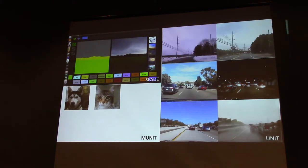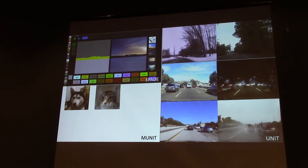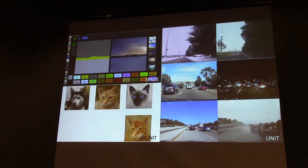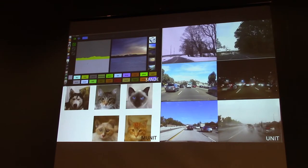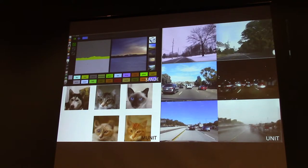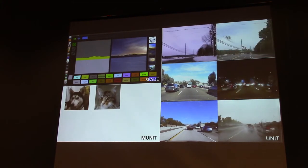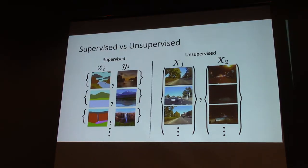The bottom result for dog-to-cat is our last year's work called MUNIT, which stands for multimodal, translating a dog to a distribution of cats. On the right-hand side are earlier results from UNIT: winter to summer, day to night, sunny to rain. You can see that the field has advanced quite a bit over the past few years.